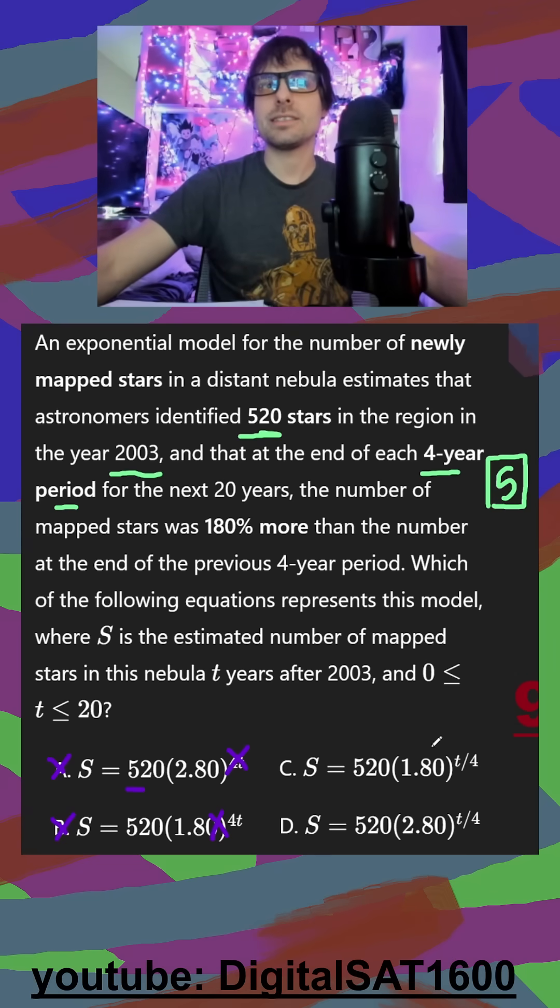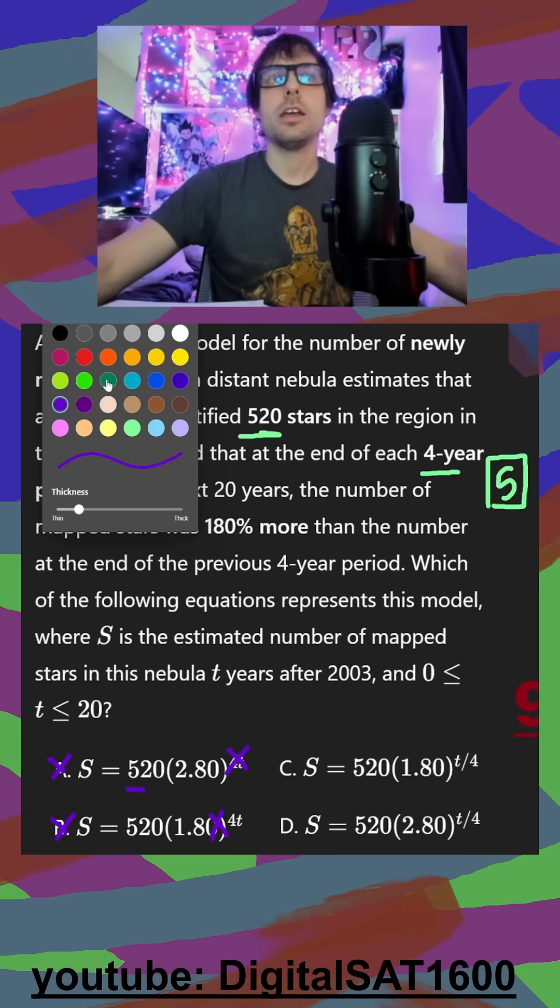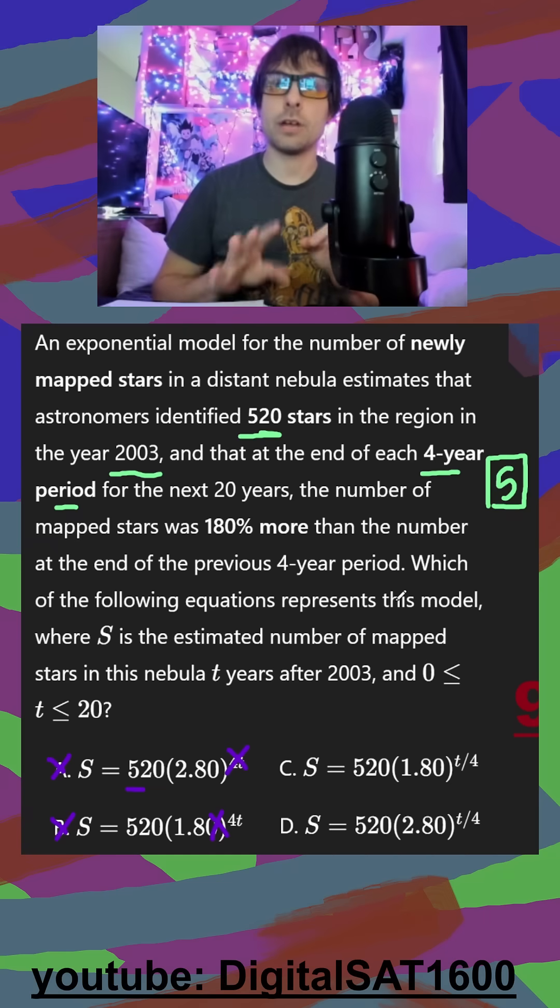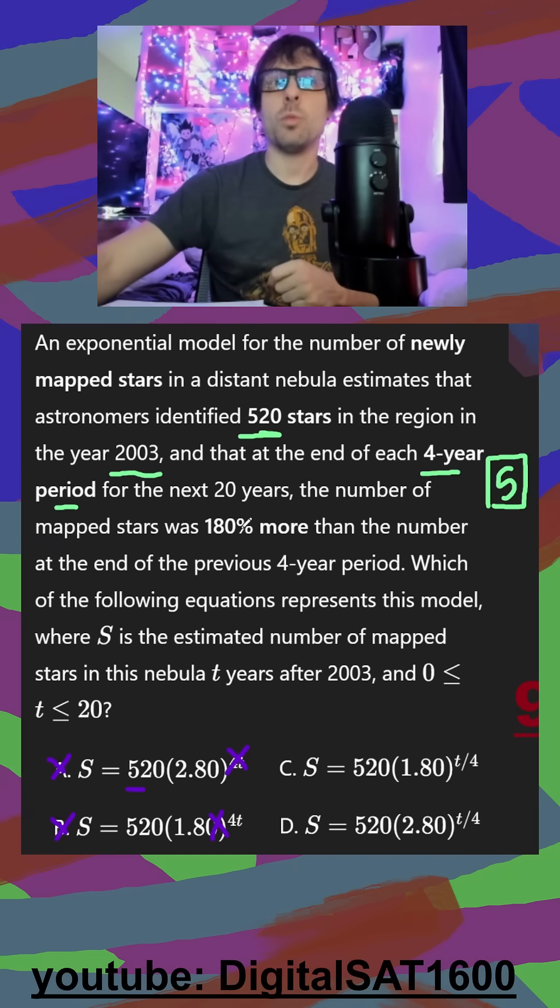And then some people might be thinking it's c because I see the 180%. But we want to remember our binary percentage rule. If it's 180% of, then it's going to be 1.8. If it's ever 180% more than or increased by 180%, you have to add one. It turns into 2.8, and it's going to be d here.